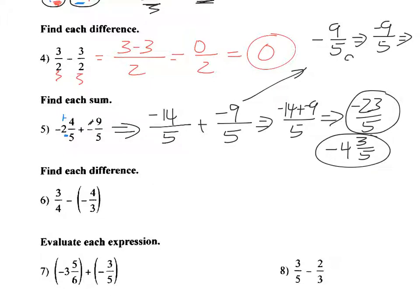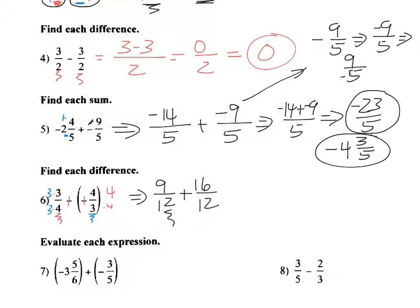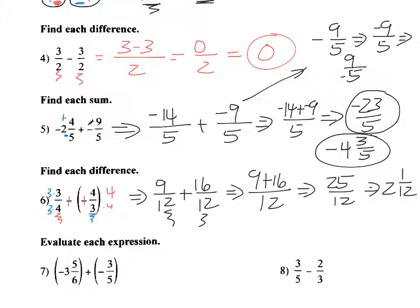Note that negative nine-fifths can be written as negative nine over five, or nine over negative five — all equivalent. For the next problem, finding the difference of two negatives: applying the change-change rule, two negatives become addition. Multiply the first fraction top and bottom by three, and the second by four, giving nine over twelve plus sixteen over twelve. With a common denominator of twelve, nine plus sixteen is twenty-five over twelve, or two and one-twelfth as a mixed number.